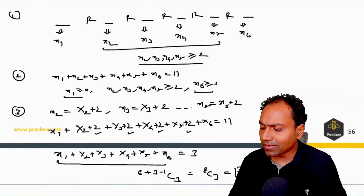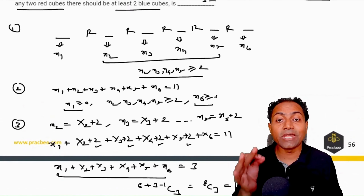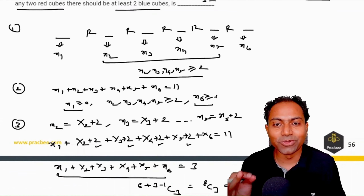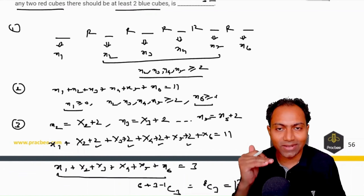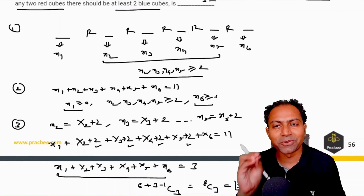The important takeaway when applying beggar's theorem is that it is only applicable for whole numbers. If whole numbers are not given in the current equation, apply a substitution to bring it to that level.